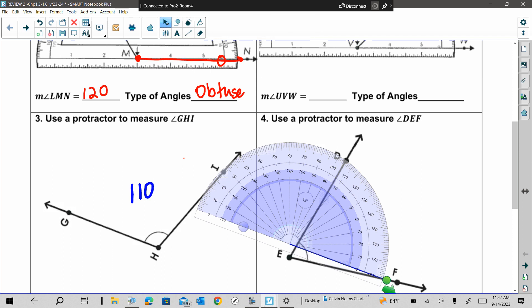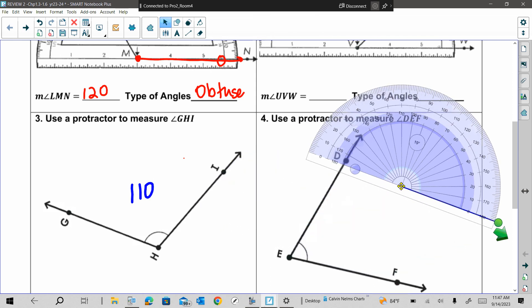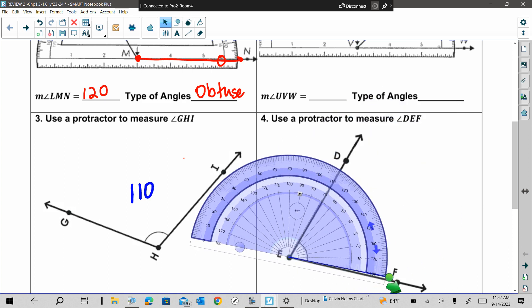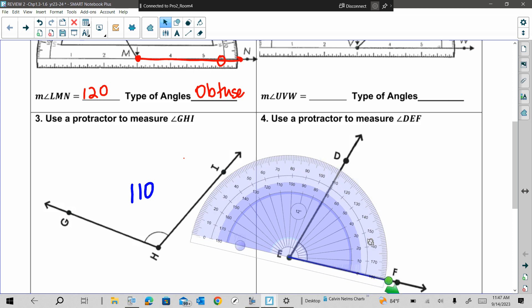I see some of y'all not lining up. Remember this center right here? That has to line up with the vertex. That's the first thing we do. We line that up. And then we turn the protractor to make sure the ray, which is the bold line right here, goes through the zero line. Then we read the scale.